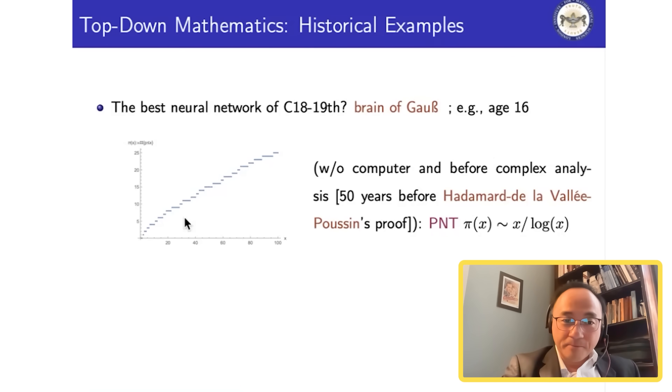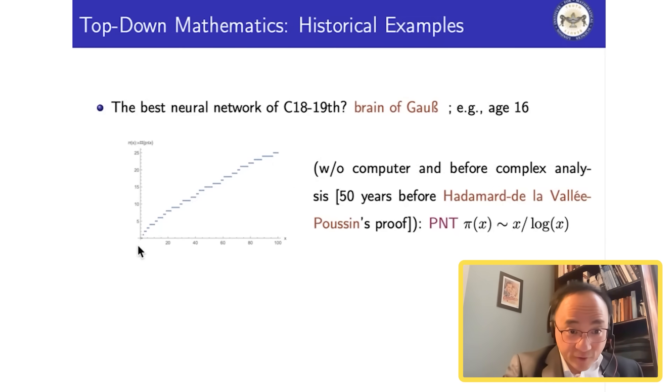So how did Gauss know this, based on just — what at the time would surely be called large data? He really went into the tens and hundreds of thousands range in order to spot these kinds of patterns. If you just plot the first hundred or so, it looks kind of like a log or a line or something. You really need to go into the thousands or tens of thousands range in order to do something like this. Amazing — that's exactly the kind of top-down guiding intuition. There was not even the foundation to prove something like this until years later.